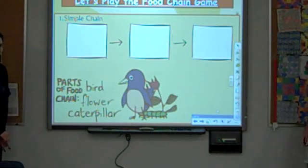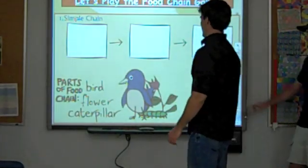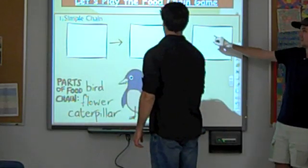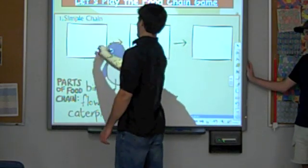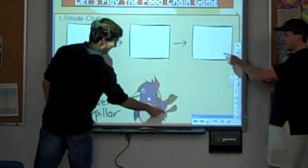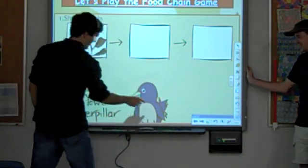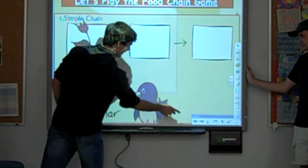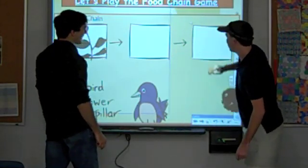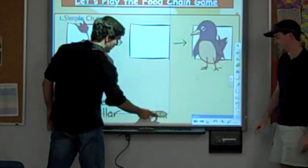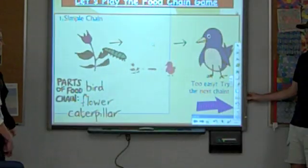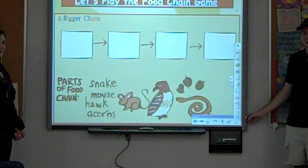A student comes up to play. You click on the picture and drag it — whatever is on the left is being eaten by the next box, which is being eaten by the box after that. The worm is going to eat the plant, and the bird eats the worm. Great job — the worm is eating the flower and the bird eats the worm. Now come try the bigger chain.